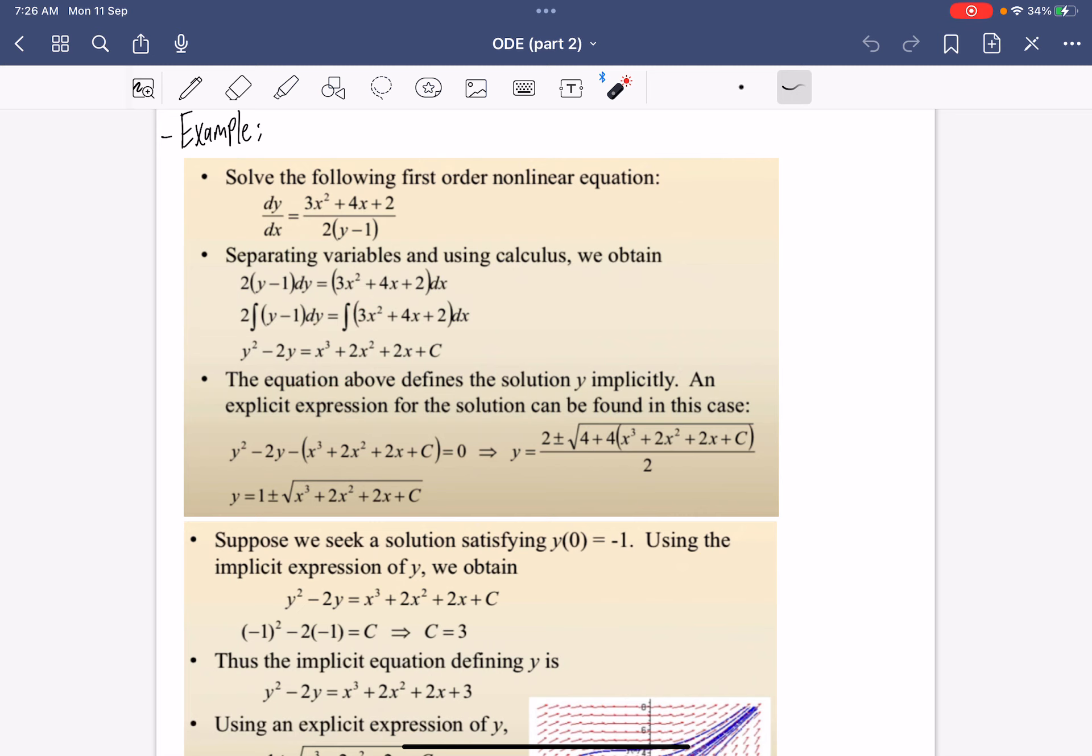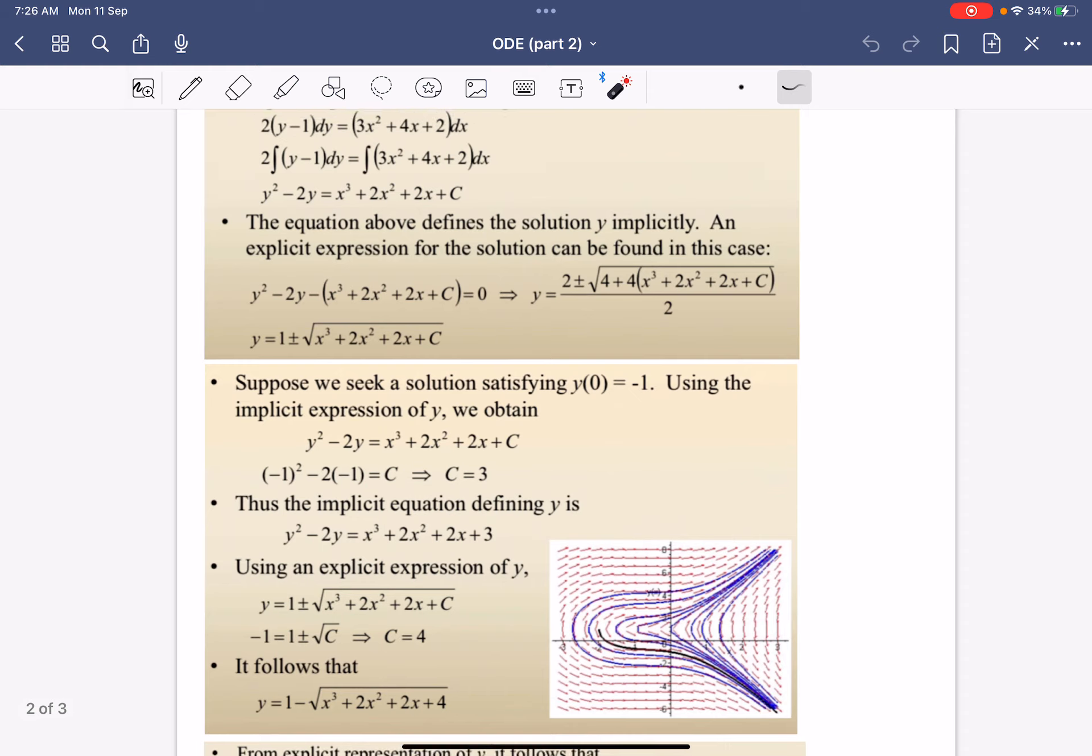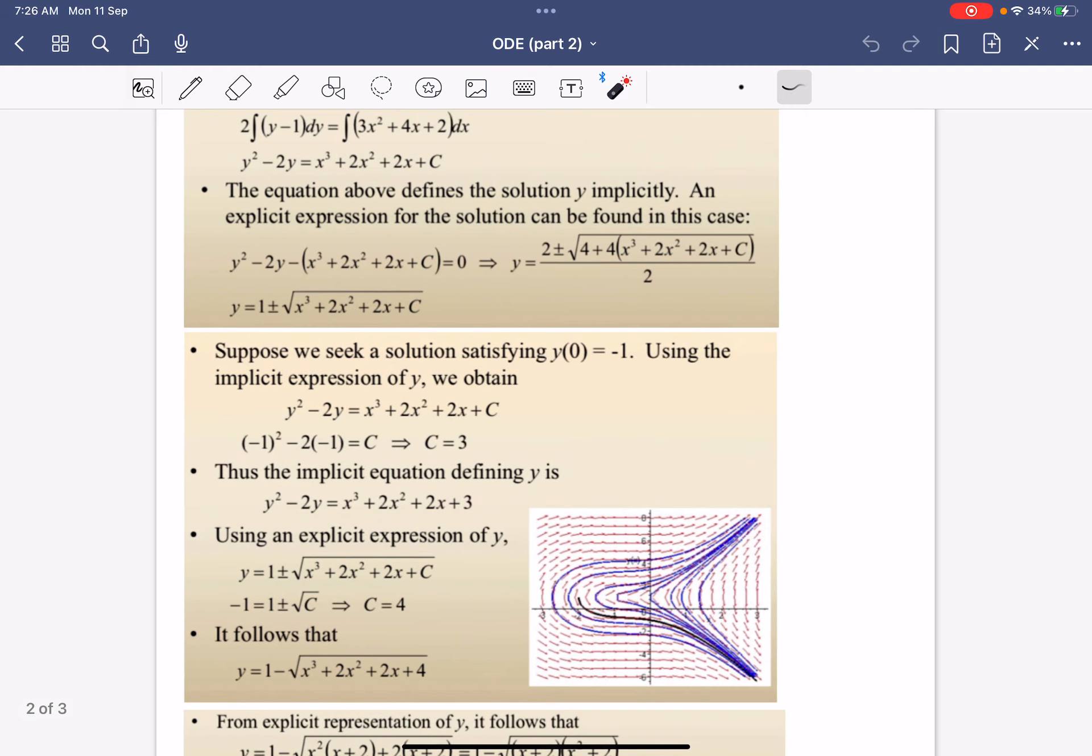Sometimes it's not possible, but in this case it is. Furthermore, if we know it's an initial value problem with an initial condition, we can find the constant. We find that c equals 3, and using that, we substitute back into the explicit formula to get this.